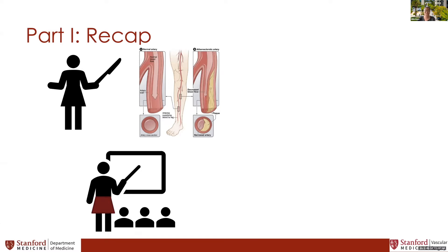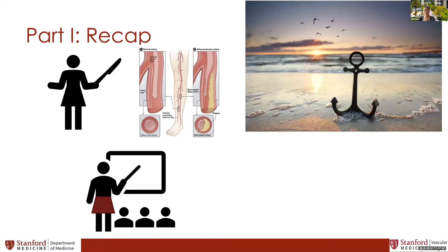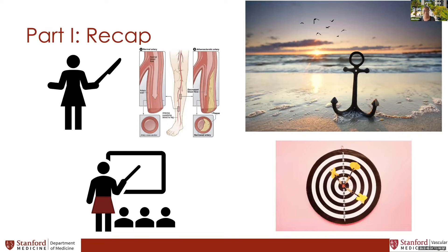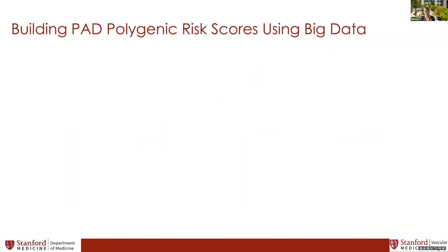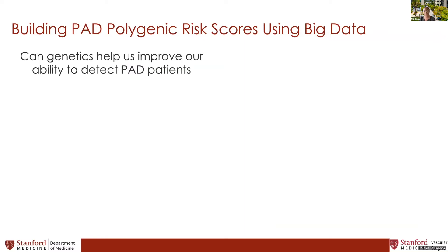A lot of our research work uses electronic health records to gain insights and predict outcomes. But early in a professor's career you're given some leeway to explore multiple angles. One question we had was: can genetics help us improve our ability to detect PAD? This led us to use data from large databases like the Million Veterans Project and UK Biobank to build a polygenic risk score for PAD.